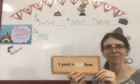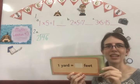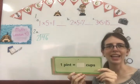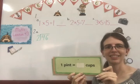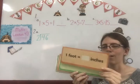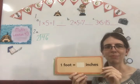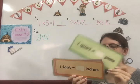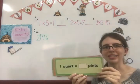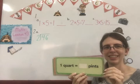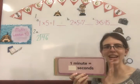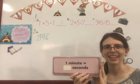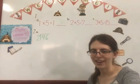One yard equals three feet. One pint equals two cups. One foot equals 12 inches. One quart equals two pints. One minute equals 60 seconds. Very good.